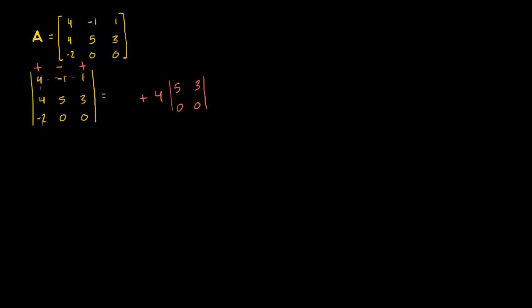Then we move on to the second item in this row, in this top row. But the checkerboard pattern says we're going to take the negative of it. So it's going to be negative of negative 1. Let me do that in a slightly different color. Of negative 1 times the determinant of its submatrix. So the determinant of its submatrix, you get rid of this row and this column. You're left with 4, 3, negative 2, 0.